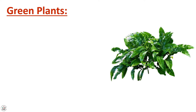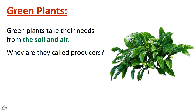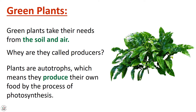As we saw in the engage and explore section, plants are living things and living things need water. So how do green plants take their needs, and why are they called producers? Green plants take their needs from the soil and the air. They are called producers because they produce their own food through photosynthesis.